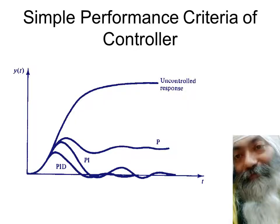Hello friends, we are back. This time we are going to see how do you go about knowing the performance of a controller. There has to be some performance criteria by which you can say whether the controller is working properly or not. You can see the effect of disturbance on any particular process, and left uncontrolled, this is going to go to a new steady state — it is not going to come back to its set point. So this is the response of an uncontrolled process.